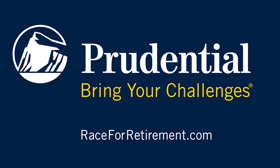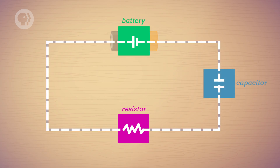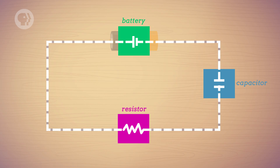This episode is supported by Prudential. Resistors, batteries, and capacitors — these are just a few of the tools we use to build circuits and provide power to the world around us. Today we're going to build some basic circuits out of resistors and batteries to figure out how they react and change, depending on their configuration.